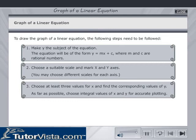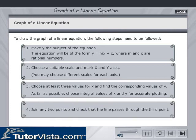Step 3: Choose at least three values for x and find the corresponding values of y. As far as possible, choose integral values of x and y for accurate plotting. Step 4: Join any two points and check that the line passes through the third point.